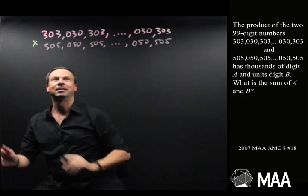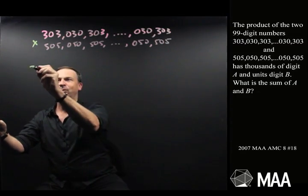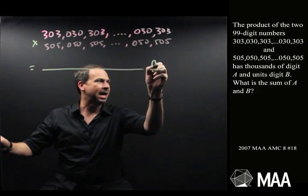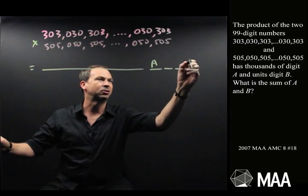If I multiply these two 99-digit numbers together, I'll get some great big long answer that ends with a thousands digit, which they called A. They don't care about the hundreds, they don't care about the tens, and a units digit B.